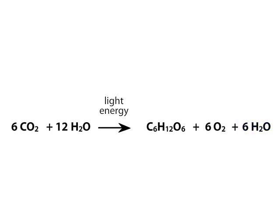Of course, knowing the reactants and products does not tell us the specific nature of the photosynthetic reactions that take place. For example, where does the oxygen that's released into the atmosphere by plants come from? Does it come from the carbon dioxide or from the water?